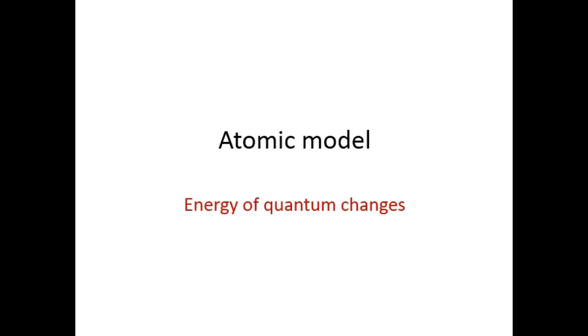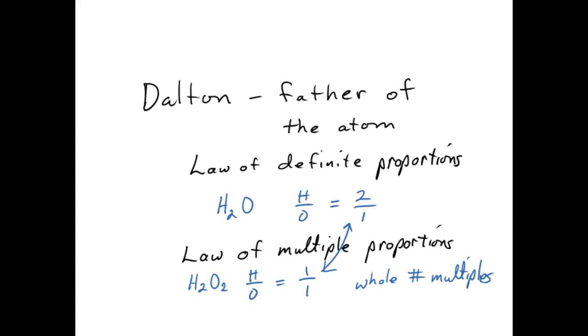A quick review of the atomic model. Dalton is given the title the father of the modern atom. He was born in the 1700s, and he noticed that if you took something like water, a hydrogen oxygen compound, and split it into its parts, hydrogen and oxygen, you would always get the same proportion of hydrogen to oxygen, in this case, two to one.